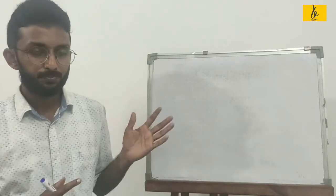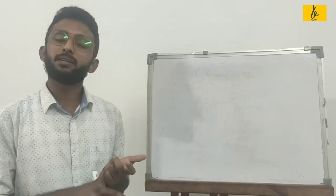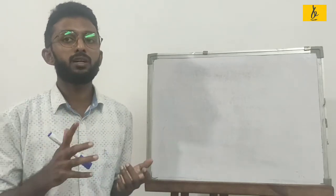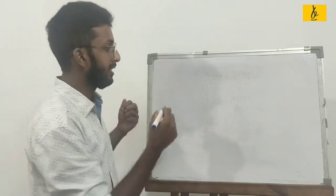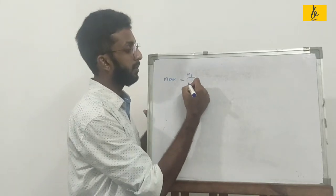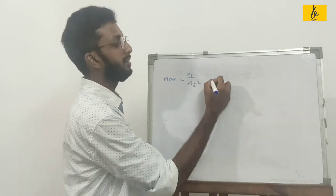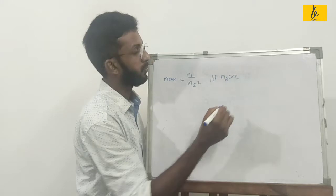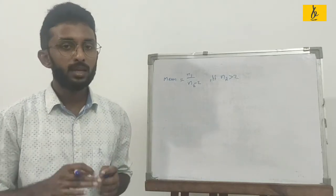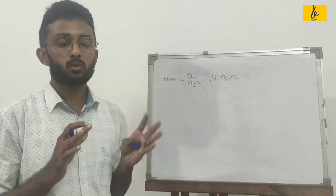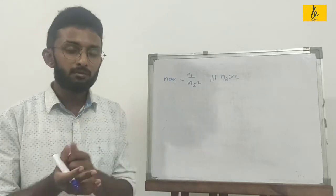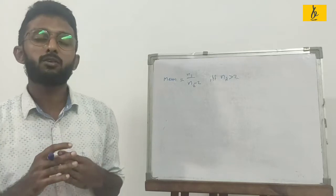The mean of the F-distribution is n2 divided by n2 minus 2, if n2 is greater than 2. Another property: the F-distribution is always positively skewed. For large values of n1 and n2, the variance of F is approximately equal to a function of n1 and n2.